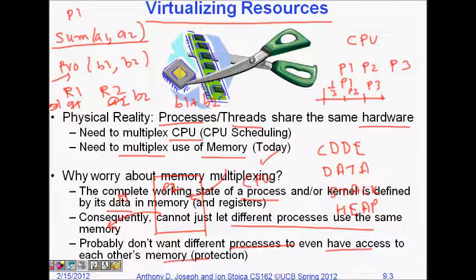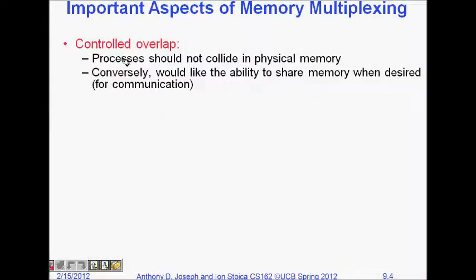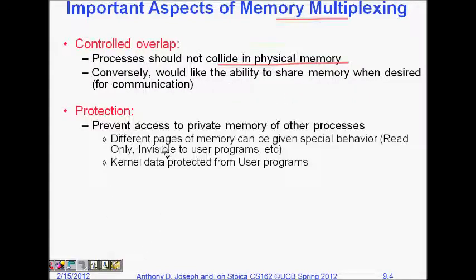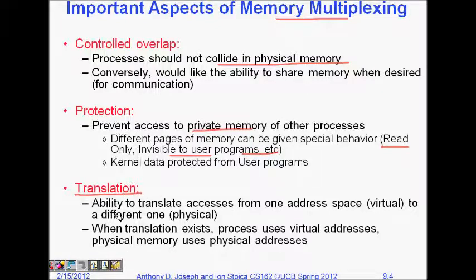So we have to multiplex our resources and probably don't want different processes to even have access to each other's memory as a protection. Important aspects of memory multiplexing are: controlled overlap — processes should not collide in physical memory; and protection — preventing access to a process's private memory. We can define memory as read-only or make it invisible to other processes.